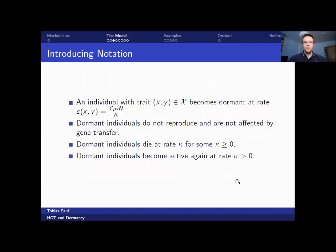For dormancy, at competition events, which happen at rate C times N over K, with probability P times X, the individual becomes dormant. And dormant individuals do not reproduce and are not affected by horizontal gene transfer. Furthermore, dormant individuals die at a constant rate kappa, which may be equal to zero or larger than zero. And they become active again spontaneously at some positive rate.